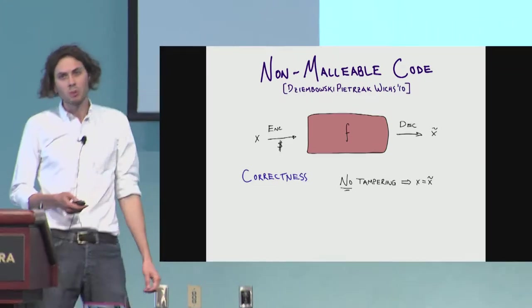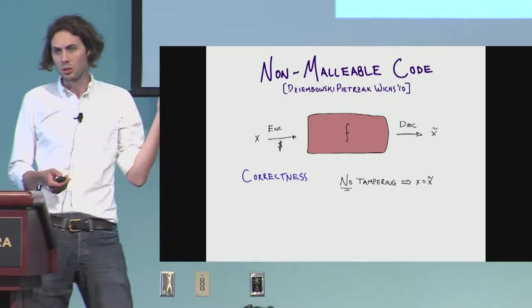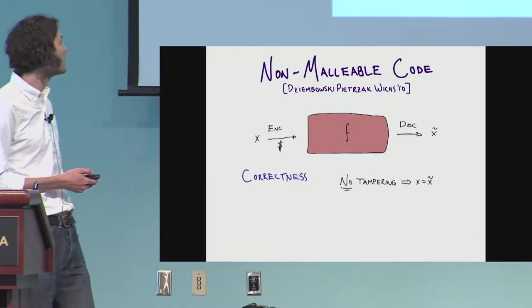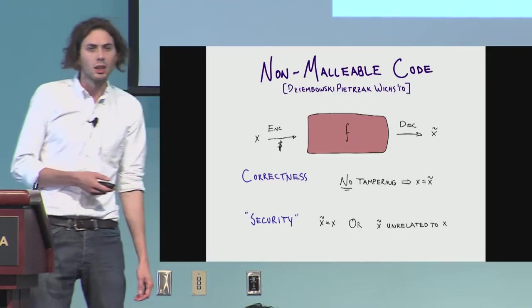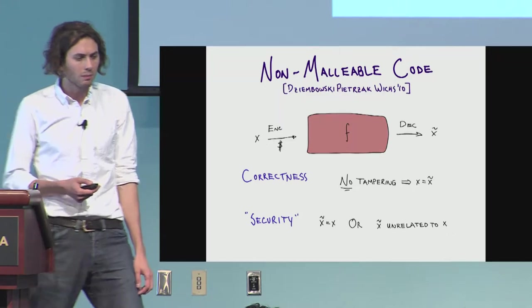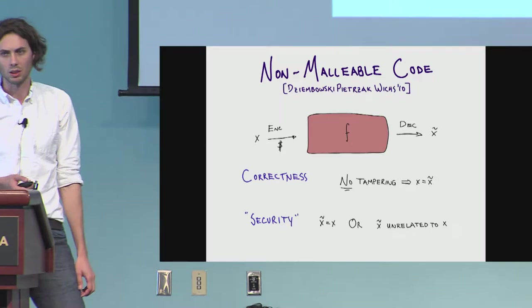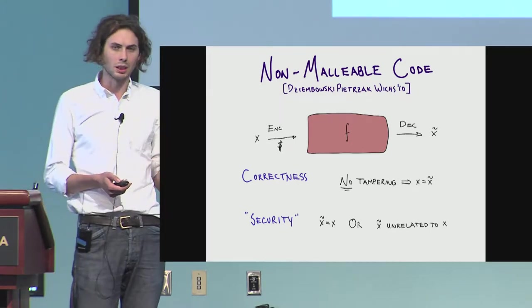We want two properties. We want correctness: if no tampering occurs, you recover the message that you sent. And we want some security properties. We want that if you do tamper with the code word, you either recover exactly what you started with or something completely unrelated.